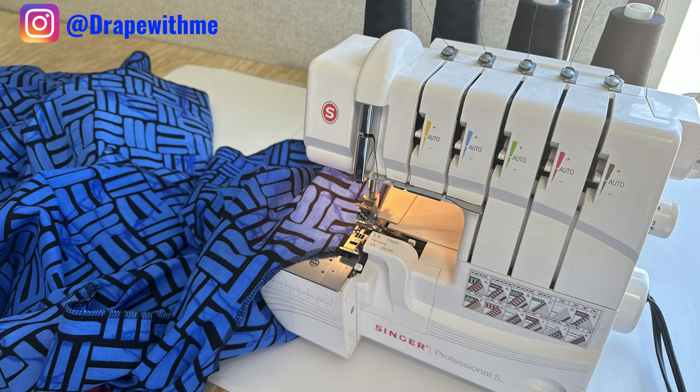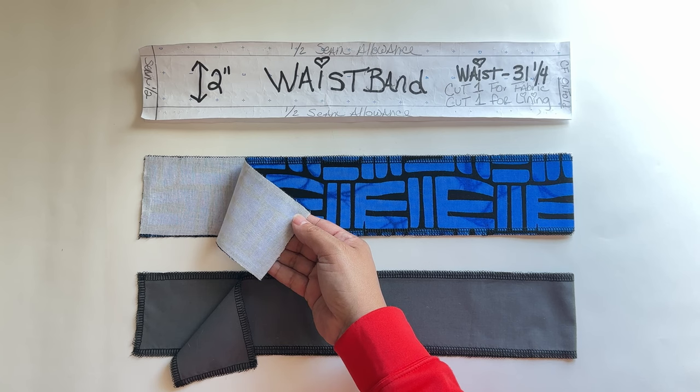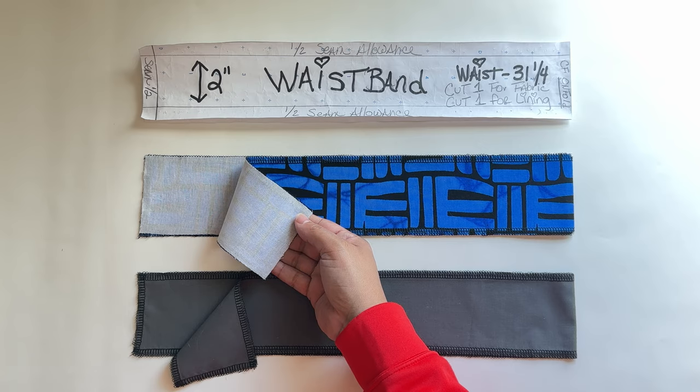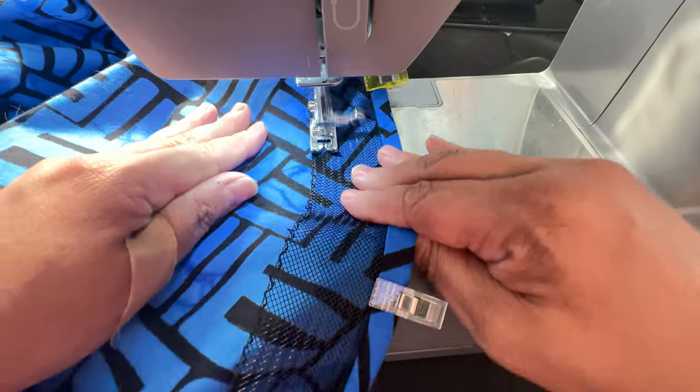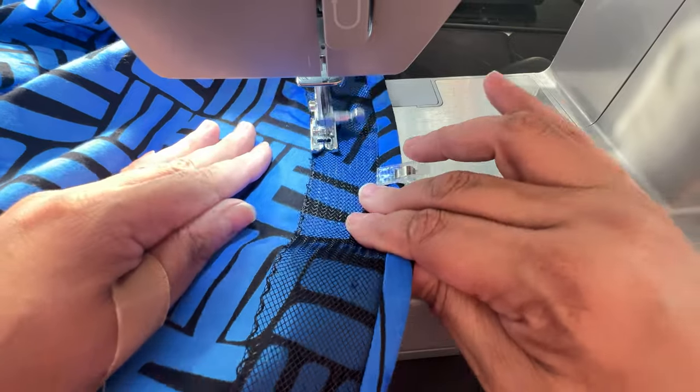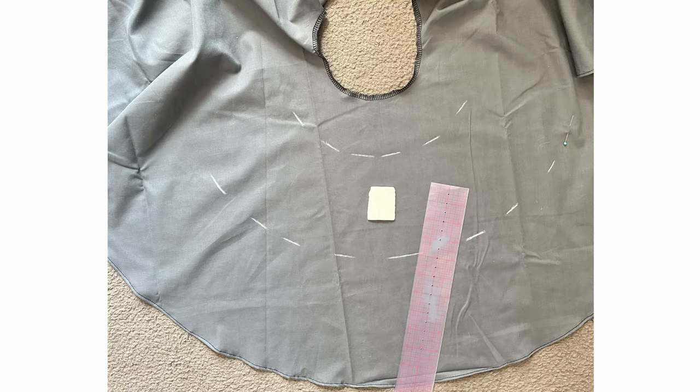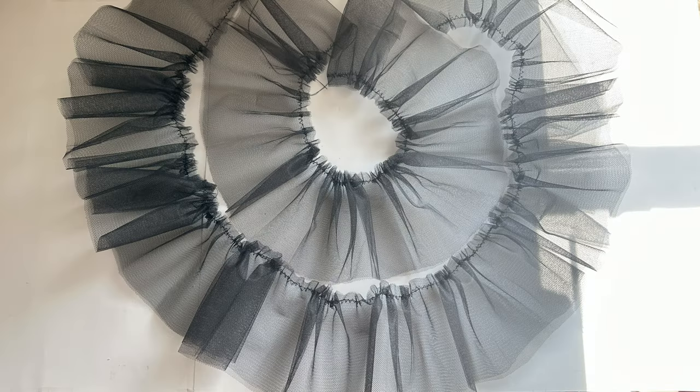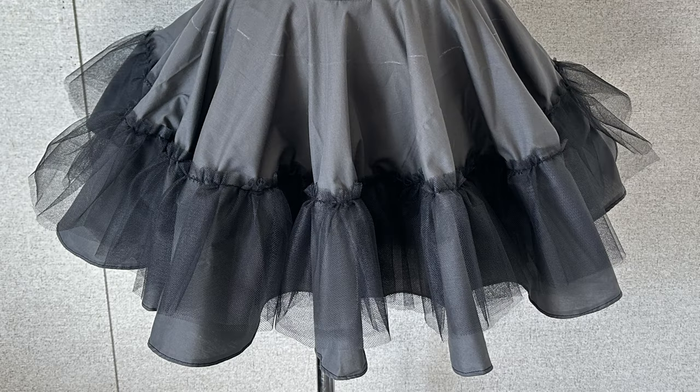For the waistband I put interfacing on the main fabric. After that, sew the two-inch horsehair. To make sure the fabric is even all around, I use a tailor's chalk. Also, when you sew this, make sure you sew it on the wrong side of the lining, the side that has the seam allowance.